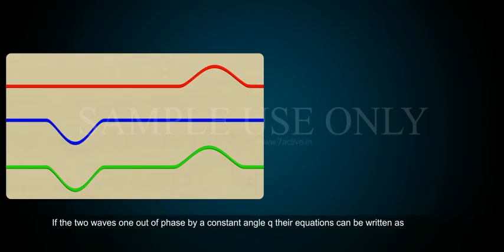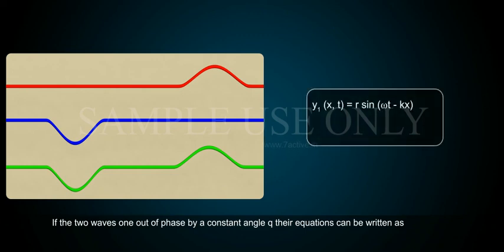one out of phase by a constant angle φ, their equations can be written as Y1(x,t) = A sin(ωt - kx) and Y2(x,t) = A sin(ωt - kx + φ).